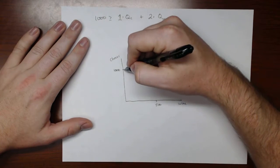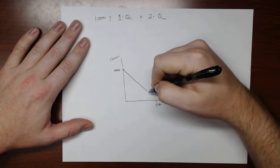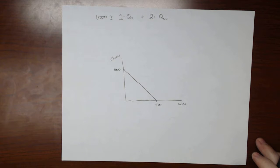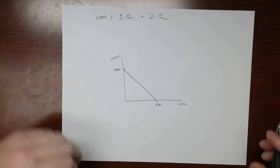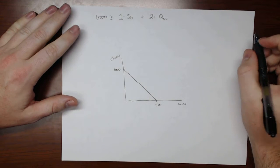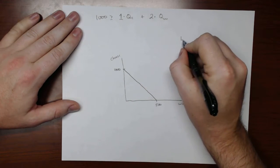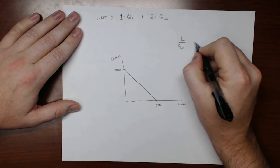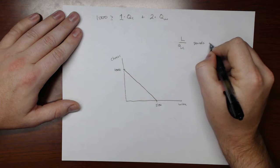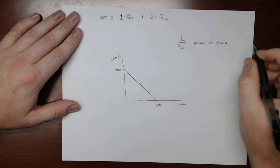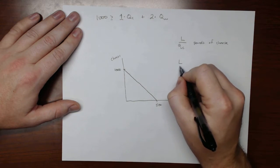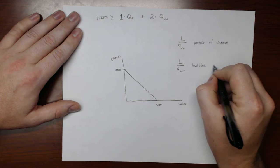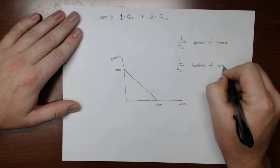And then we can just draw a straight line between them. And that would give us our PPF curve.